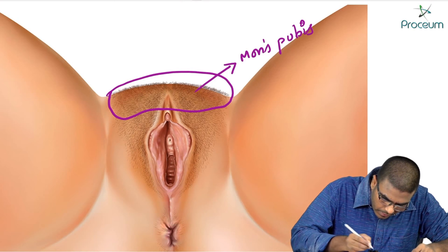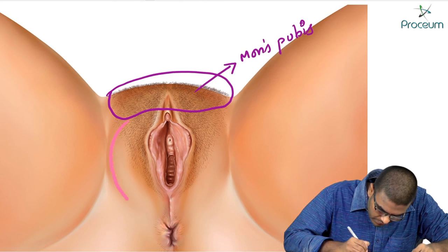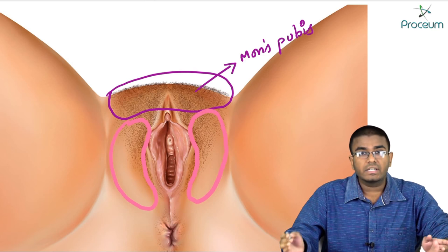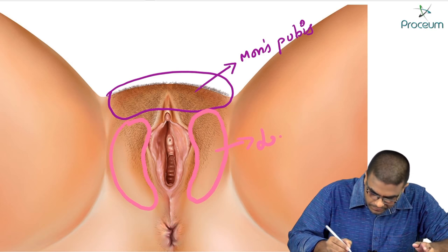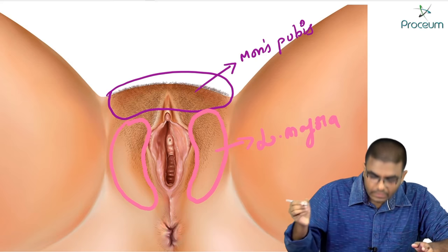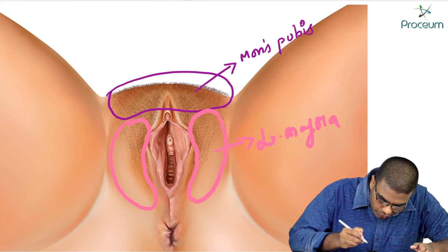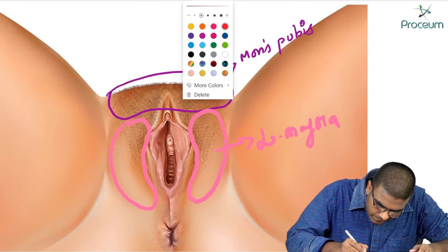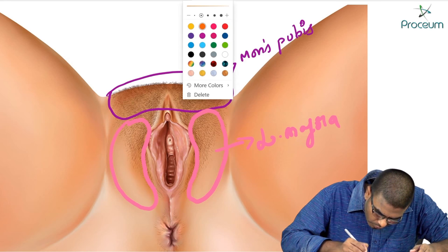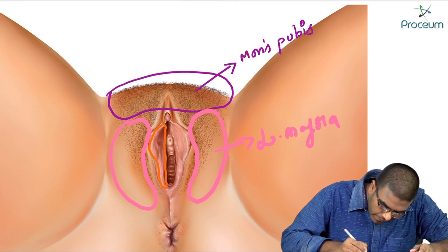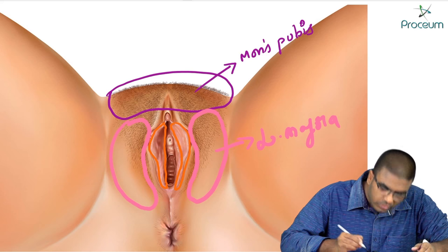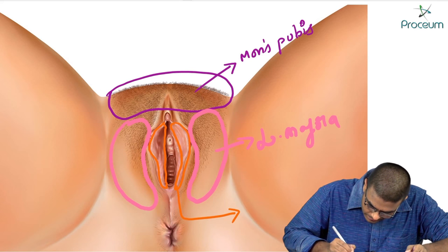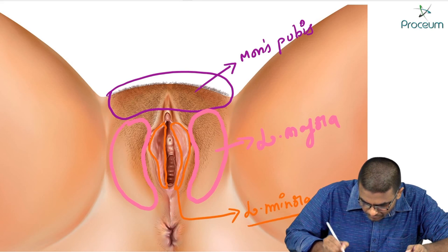These thick folds of skin which are present laterally are known as labia majora. Now labia minora — these thick folds of skin which are present medial to the labia majora, these folds are known as labia minora.